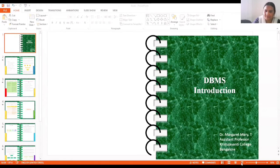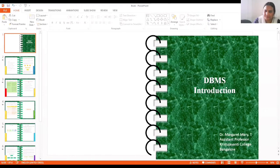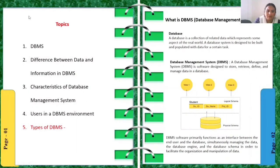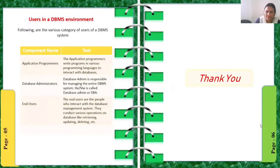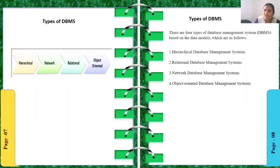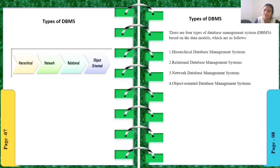In this video, we are going to discuss types of DBMS. There are four types: hierarchical, network, relational, and object-oriented. There are four types of database management system based on the data model. We will discuss them one by one.